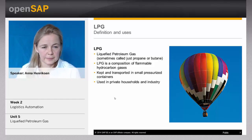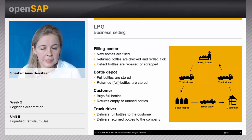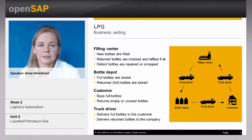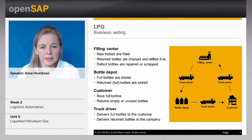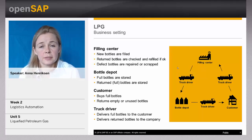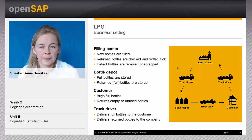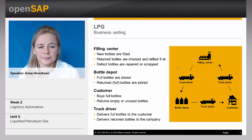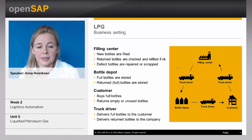Let's look at the setting. We'll take a very simplified setting just so you can get to know the system — for a normal business it could be a lot bigger, but that's no problem. First we have the filling center and we have a bottle depot. The filling center is where the gas is filled into the containers, and broken or empty containers coming back are handled there. The bottle depot is where the bottles are stored when filled and ready to go out to the customer. Then we have one customer that buys the full bottles and returns empty or unused bottles, and a truck driver that delivers bottles to the customer and brings them back.